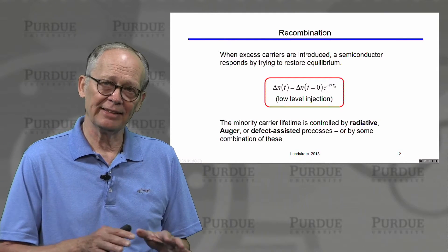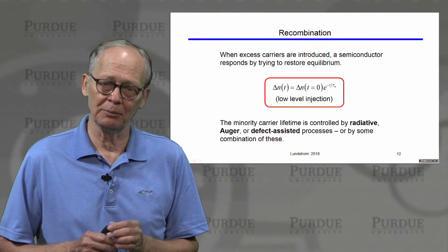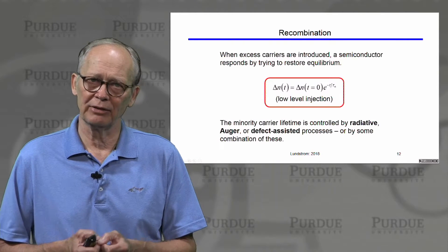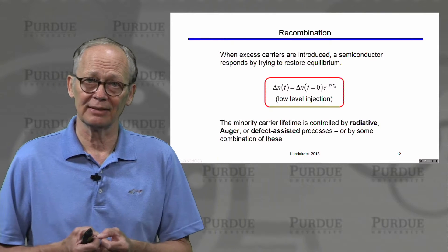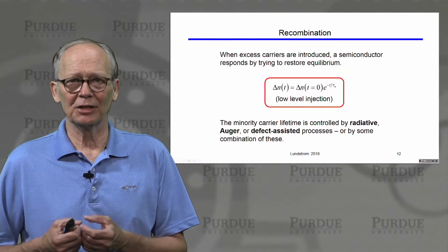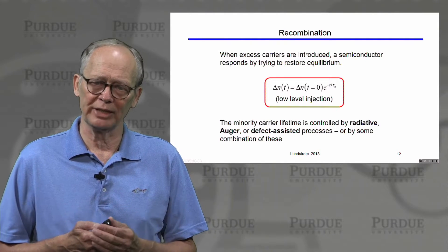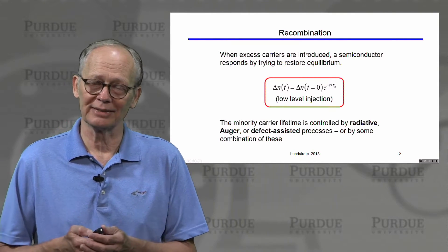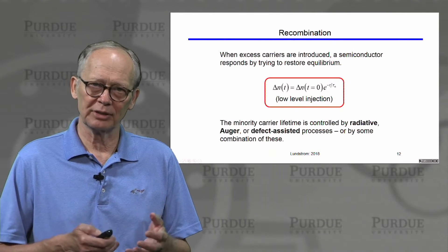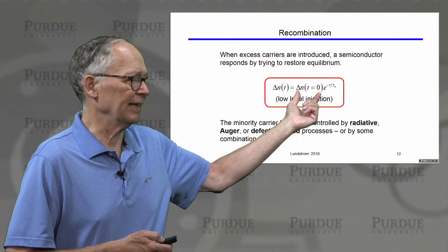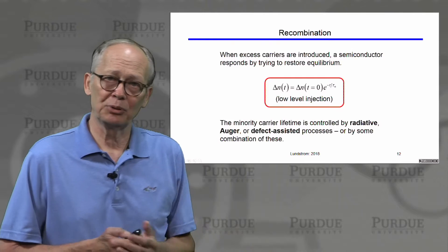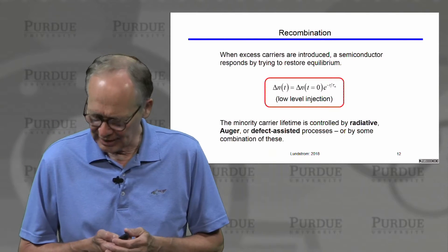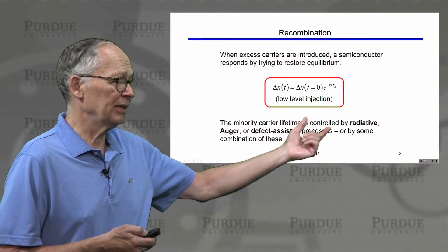After carrier transport, we moved on to carrier recombination. The key idea is that if we inject excess carriers above the equilibrium number, or pull some away creating a deficit, the semiconductor will respond to restore equilibrium through recombination processes. A perturbation in electron density above equilibrium will decay exponentially with a characteristic time determined by the recombination processes occurring in the semiconductor.